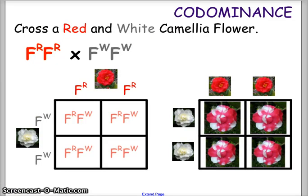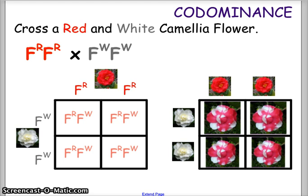Just as we did with standard Mendelian genetics, we can break this down using a Punnett square. We cross a red camellia (F^R F^R) with a white camellia (F^W F^W). We segregate the alleles — F^R over each column for the red flower, and F^W for each row on the left for the white flower. When we cross them like a multiplication table, we get F^R F^W in each offspring box, so crossing a red and white camellia gives the modeled pink camellia in all cases.